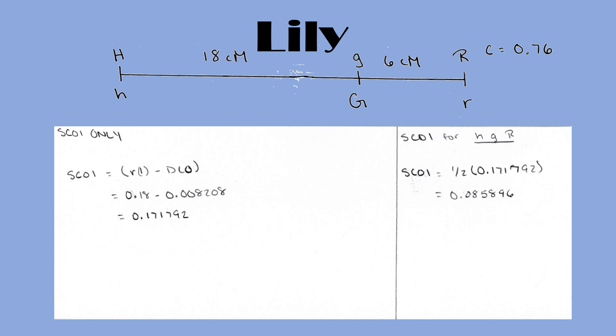Again, that was for the single crossover only. So in order for the specific gamete type, we have to multiply it by one half, which gives us 0.085896.